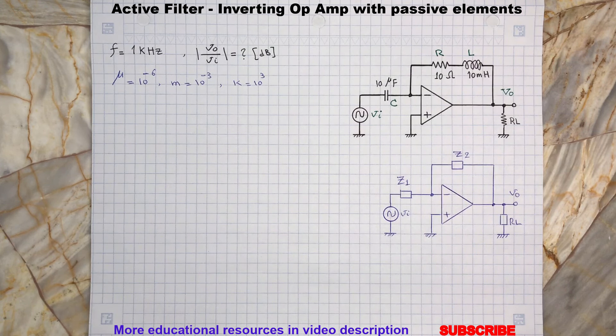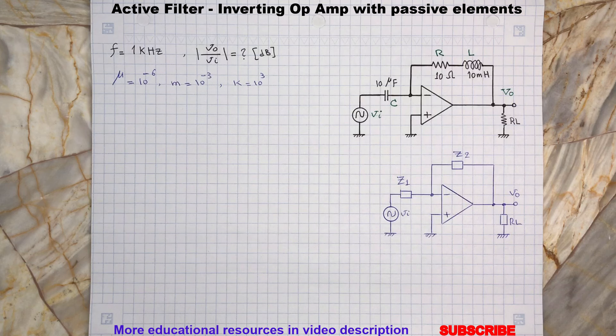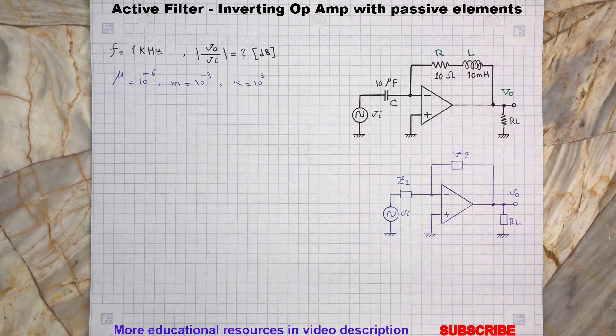A quick reminder about the circuit elements here. The capacitor C is in microfarad and micro is 10 to the power of minus 6. The inductor L is in milli Henry and milli is 10 to the power of minus 3. And frequency is in kilohertz and kilo is 10 to the power of 3.